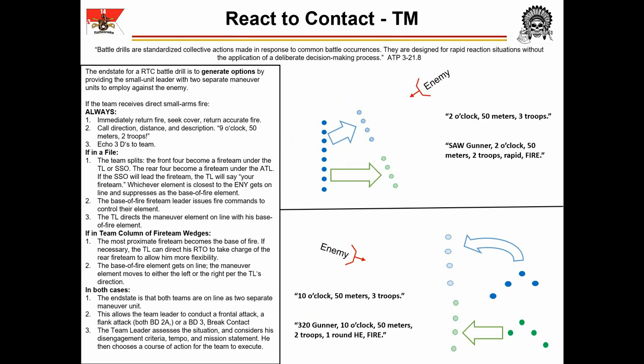Once the three Ds have been called, the team leader makes his decision on what to do next. If he decides to conduct a React-to-Contact, he will instruct the unit to get online. If the team is in a file, the front four members become a fireteam led by either the SSO or the TL. If the TL wants the SSO to lead, he directs by saying 'your fireteam' and the SSO's name. The rear four members become a fireteam led by the ATL. The element closest to contact becomes the base of fire and immediately begins suppression. With the enemy suppressed, the team leader directs the maneuver fireteam to get online and engage the enemy. The end state from a file is the entire team online, oriented on the threat, delivering effective direct fire, and operating as two distinct maneuver elements.